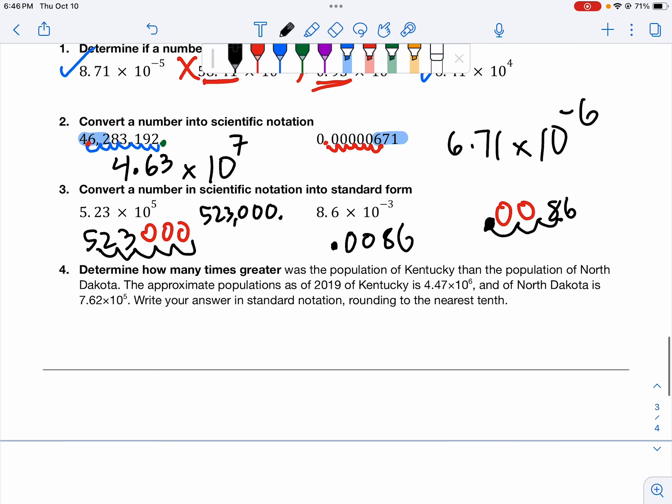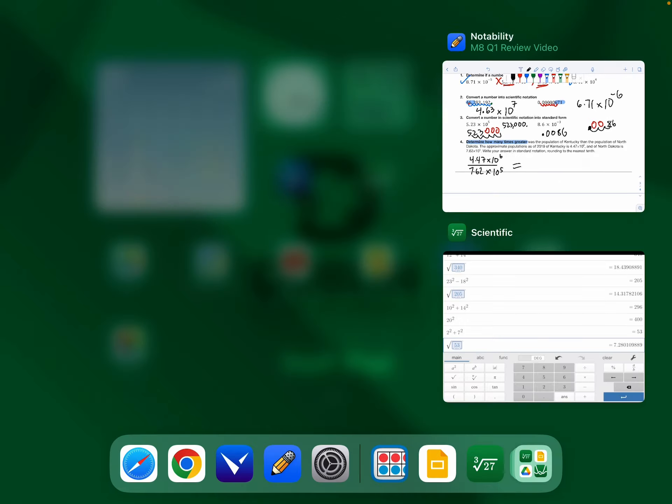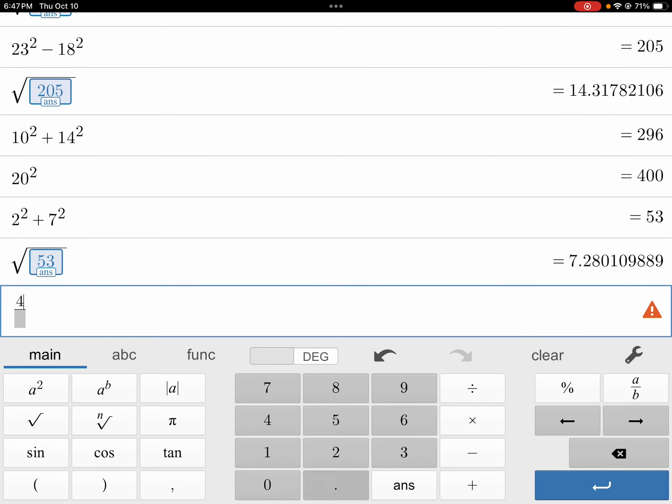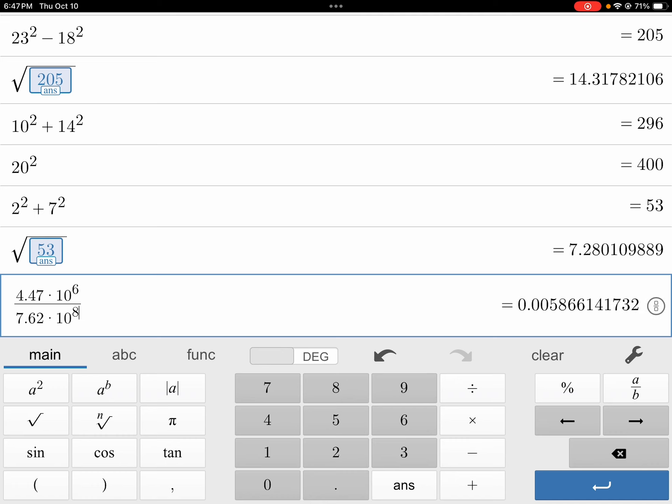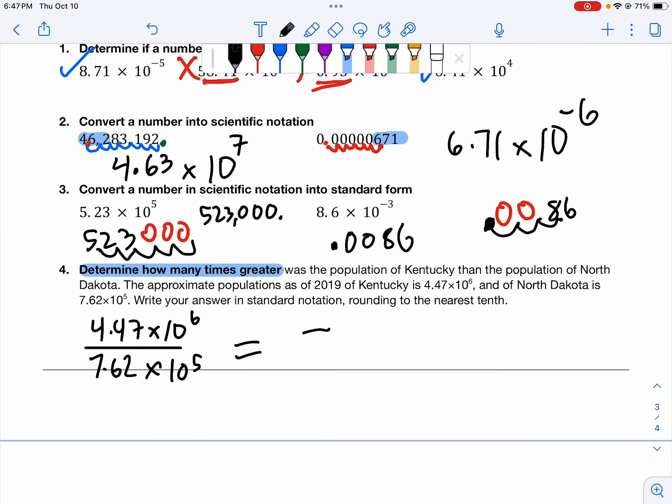Last type of question is going to be determine how many times greater. When we're determining how many times greater, we are going to divide. This says determine how many times greater the population of Kentucky was than the population of North Dakota. So Kentucky's got to go on the top. North Dakota has to go on the bottom. We go to our calculator. We do the division. We round our answer to the nearest tenth. 4.47 times 10 to the sixth divided by 7.62 times 10 to the fifth. This would be 5.9 times larger.